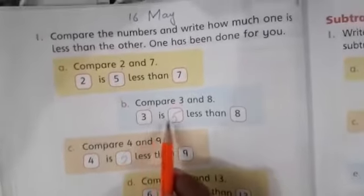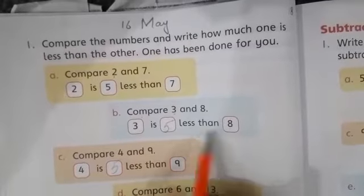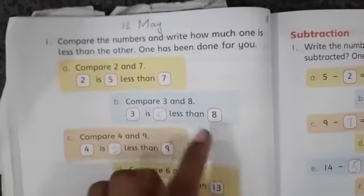3 is 5 less than 8. 3 means 5 numbers less than 8. 8 number.